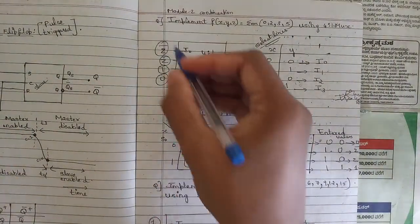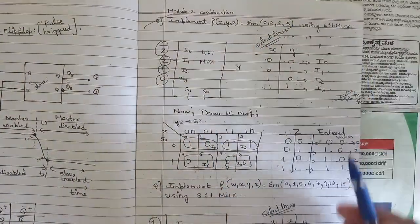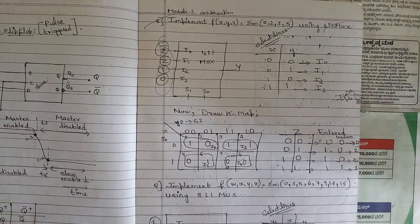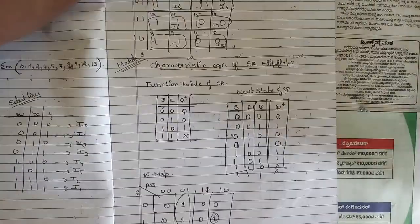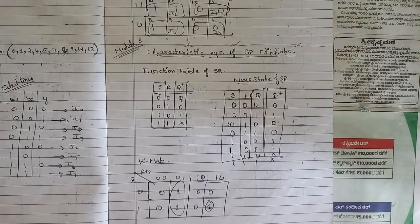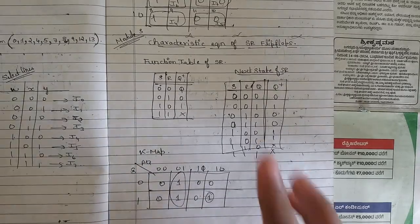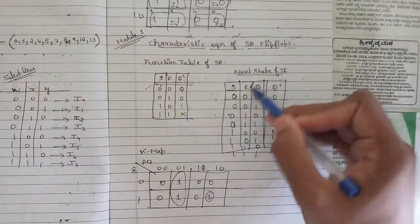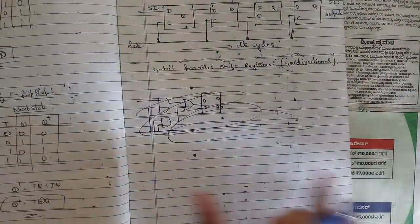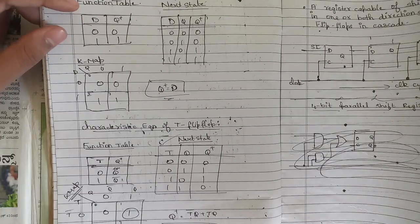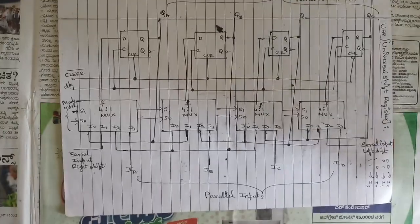For Module 3, one fixed question is implementing F(x,y,z) using a 4-to-1 MUX — substitute the value in the K-map and solve. Also fixed and multiple-times repeated: write the characteristic equations for all four flip-flops — SR flip-flop, JK flip-flop, T flip-flop, and D flip-flop. For each, draw the function table, next state table, and derive the K-map to get the characteristic equation.